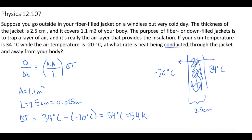Now all we have to do is plug in our values. For K, when we look it up, you might get a little confused. There are two options: one says fur or down feathers, which you might be tempted to use, but for that one they give a range — something like 0.02 to 0.06 — which isn't super helpful. But in the question they say it's really the air layer used as insulation, so let's use the K value for trapped air, which is 0.026.